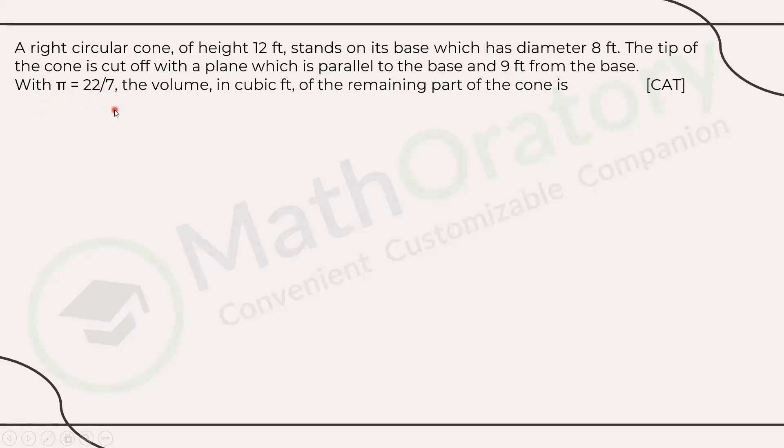With pi equal to 22 by 7, the volume in cubic feet of the remaining part of the cone. So this remaining part is a frustum. Even if you don't know, it is fine. You can apply similarity and figure it out. But you have to apply similarity. At least you have to understand that there's a similarity happening. So let me just draw the figure as appropriately as I can.